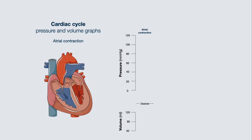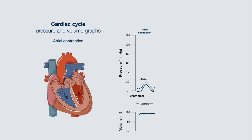We can graphically show the pressure and volume changes that occur during the cardiac cycle. During the initial phase, the atria contract to fill the ventricle with the remaining blood, increasing atrial pressures, which rapidly decline as the atria relax. The ventricular volume increases slightly, as most filling occurs passively, and as the ventricles fill, ventricular pressures also increase. The aortic pressures are on a decline.